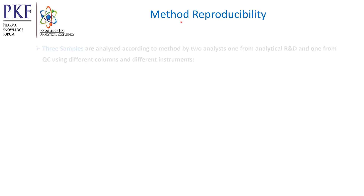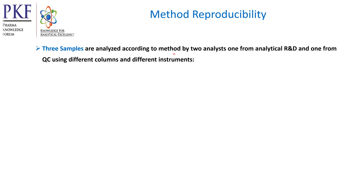In method reproducibility, three samples are analyzed according to the method by two analysts — one from analytical R&D (the sending lab) and one from quality control (the receiving lab) — using different columns and different instruments. If three samples are not available and only two samples are available, one sample will be prepared four times and the second sample will be prepared two times and injected.